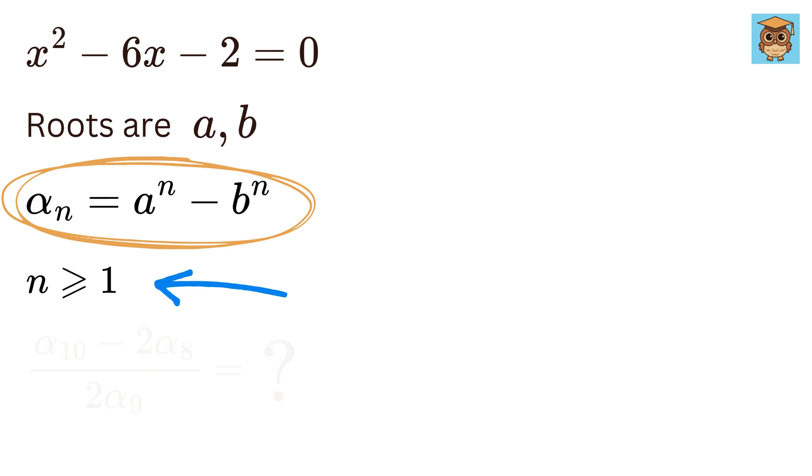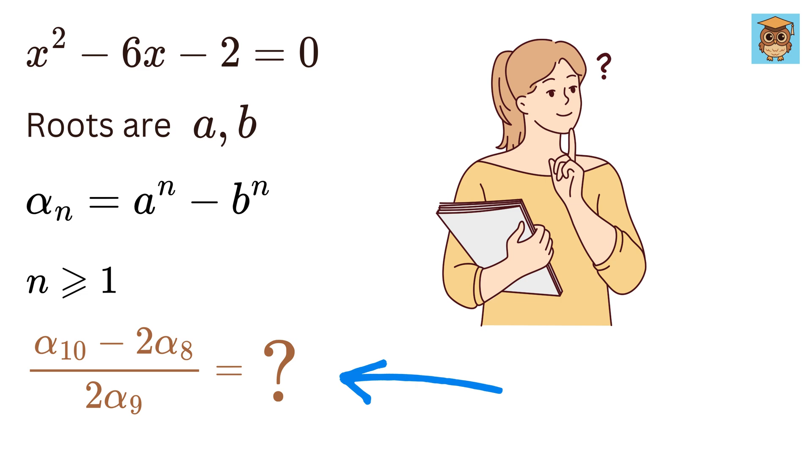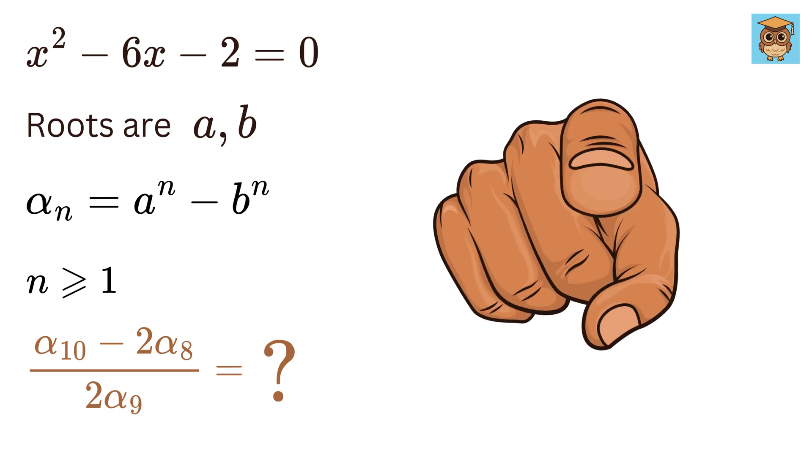That is, n ≥ 1. So what will be the value of (α_10 - 2α_8) divided by (2α_9)? Can you solve it?